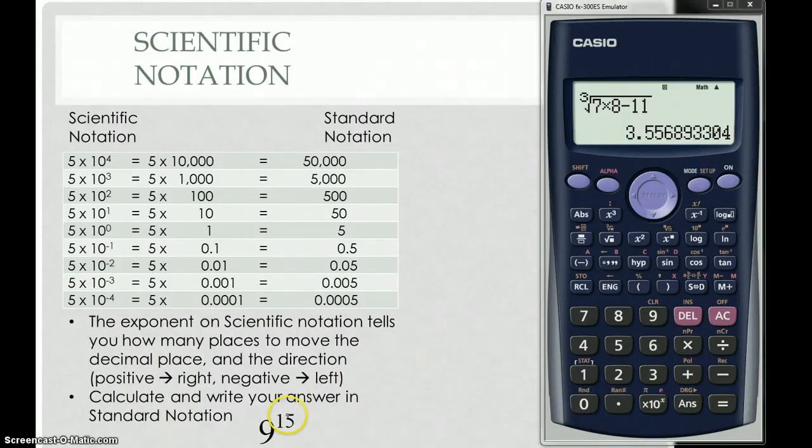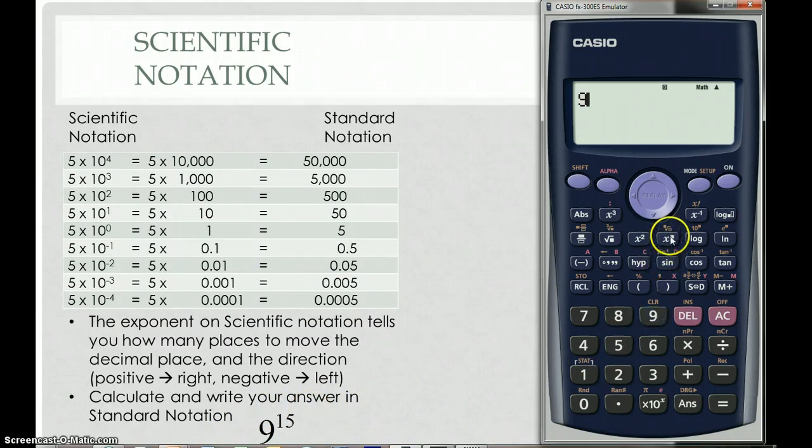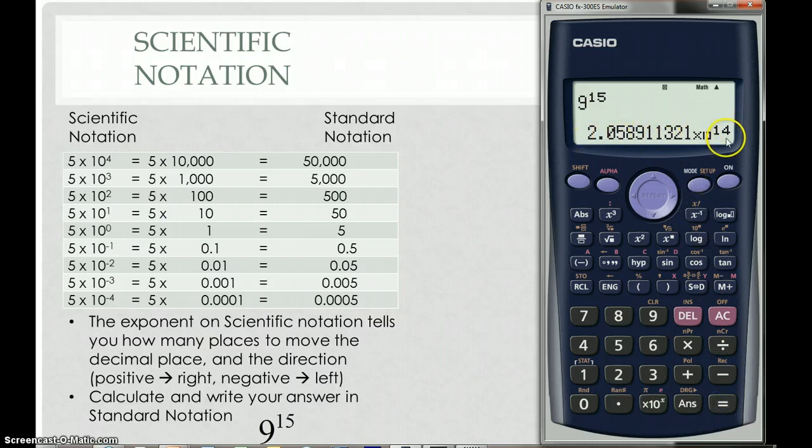For instance, if I type this number in, 9 to the 15th, 9 raised to the 15th, and I hit enter, I get this weird looking number here. This number is in a special format called scientific notation, and it has that name because scientists use it to write really big numbers in something that's a little bit easier to read.